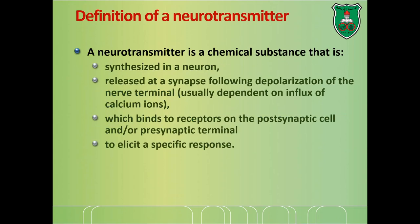Let's start by defining what a neurotransmitter is. It's basically a chemical substance that, one, has to be synthesized in a neuron. It is released at the synapse following depolarization of the nerve terminal, usually as a result of influx of calcium ions. Once released, this neurotransmitter binds to a receptor on the postsynaptic cell or the presynaptic terminal, activating a signaling pathway inside the cell resulting in a specific response.